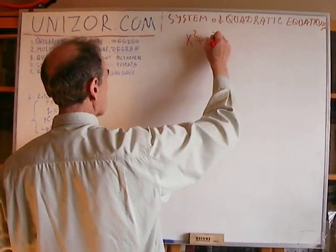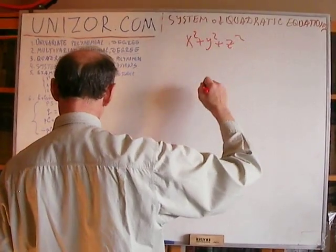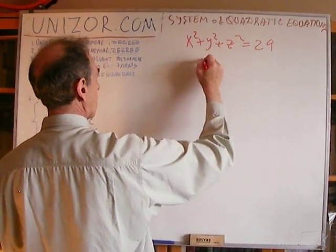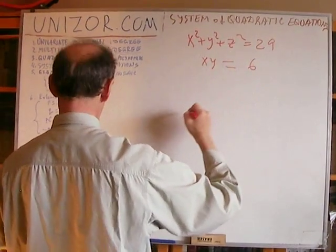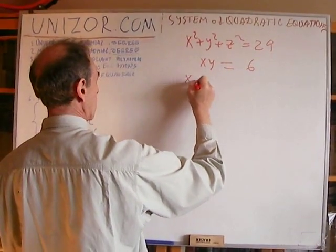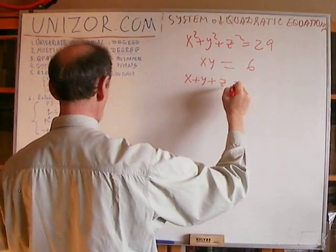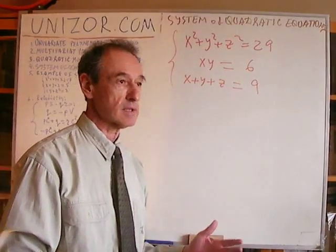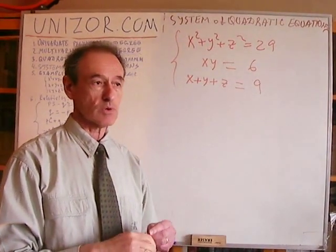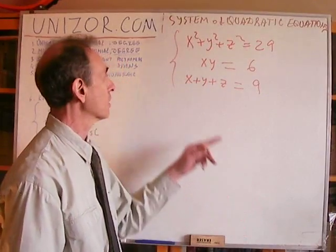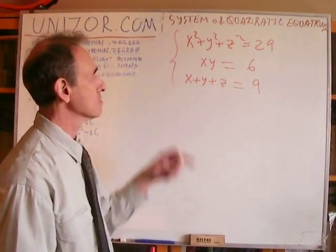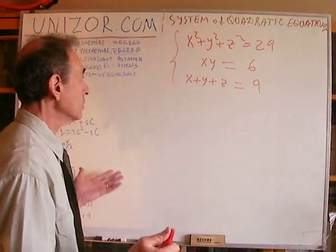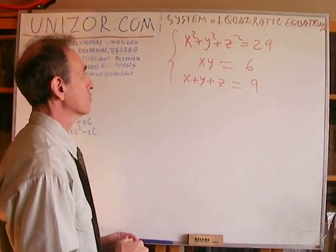Here is the second example: x² plus y² plus z² equals 29, xy equals 6, and x plus y plus z equals 9. This is not exactly a system we can solve blindly using one approach, because I have two equations of second degree and one equation of the first degree.